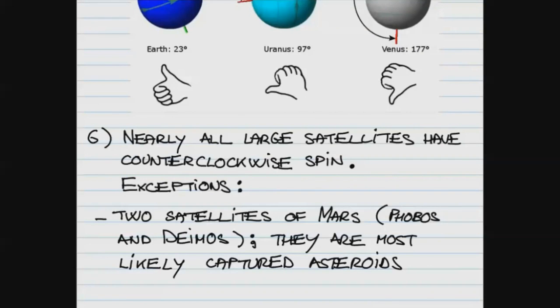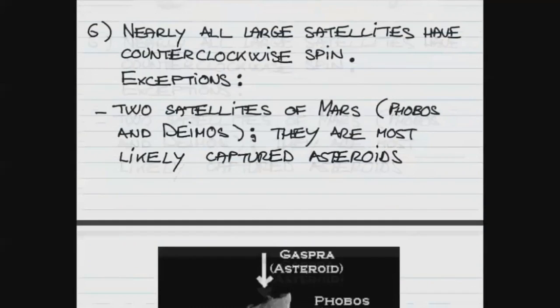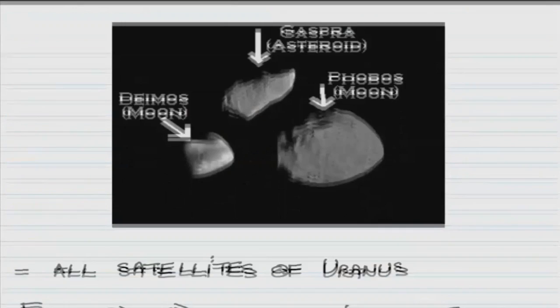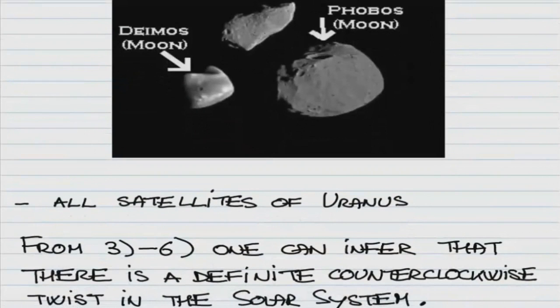Then Mars could capture those bodies. So to support that idea that they are likely captured asteroids, I'm showing here photographs of these two. They're quite small in size, a few kilometers across, of these two satellites of Mars. And here is the photo of well-known asteroid Gaspra. So you see that they are basically bodies of the same type. So it is nearly certain that Deimos and Phobos are captured asteroids.